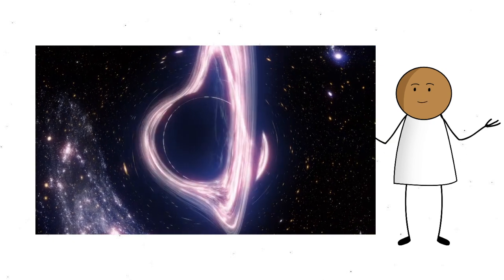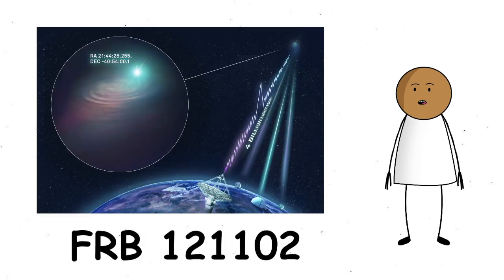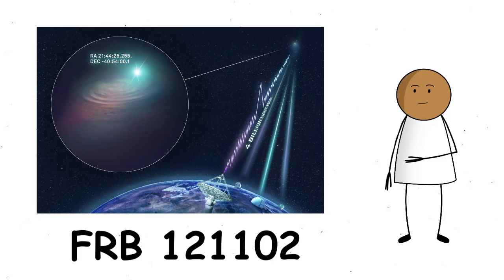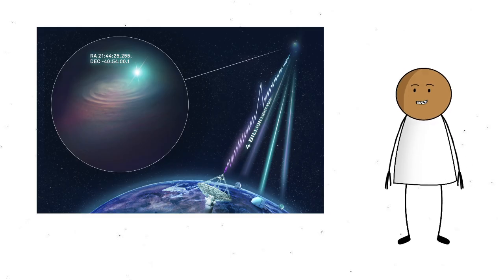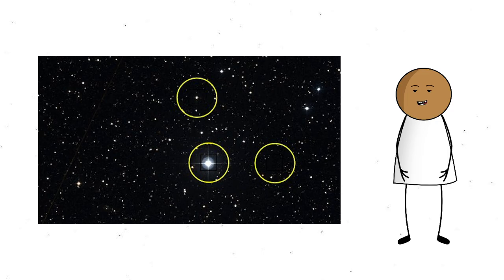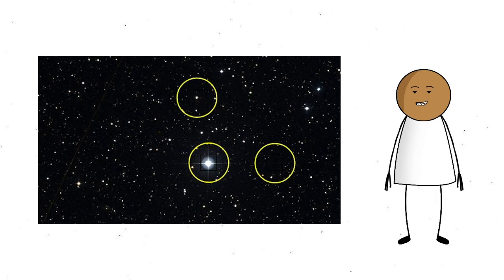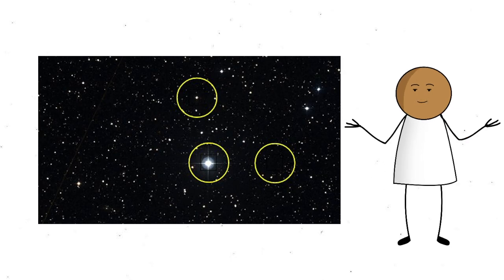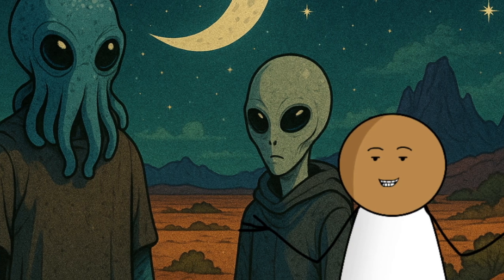And then there's the juicy part. Some FRBs repeat. One in particular, called FRB 121102, has a pattern. It chirps out bursts on a cycle, like a really shy DJ with commitment issues. The regularity made headlines, because, well, regular signals tend to feel intentional. And whenever something feels intentional in space, people start whispering about aliens.